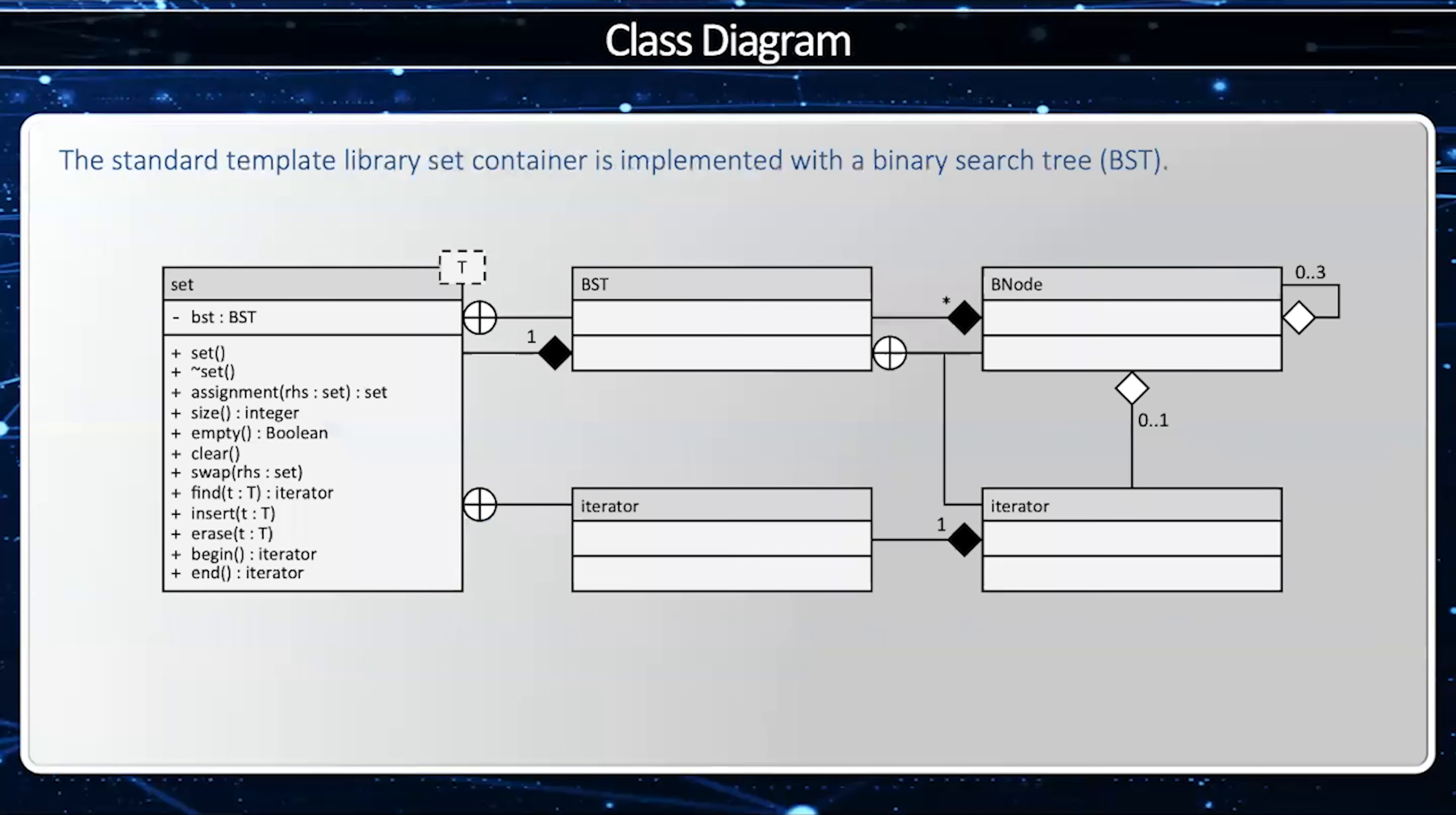So here's a class diagram showing the BST implementation of the set. Man, this is complicated. Let's walk through all the different aspects. First of all, we have a B node. A B node, or a binary node, is a single node in the binary tree. It's going to store an element and a pointer to the left child, right child, and the parent child. It's going to have up to three elements, zero, one, two, or three elements by association.